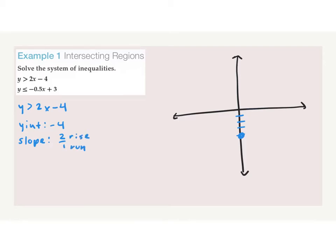So we go up 2 and to the right 1 and put a point there. Now we connect these two points with either a solid line or a dotted line. If we just have a greater than sign, what type of line is it? A dotted line. So we connect our two dots with a dotted line.